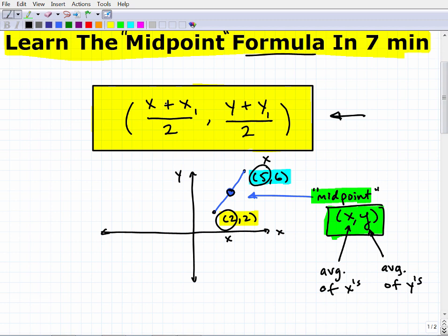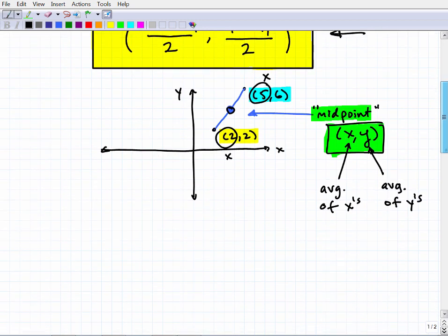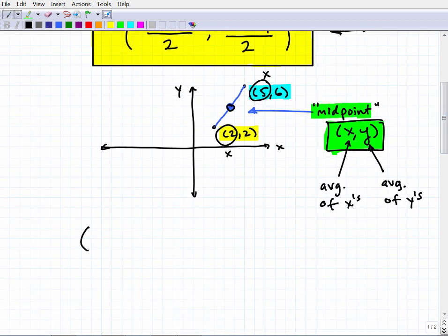How do we find the average? Well, we're going to add up the two points and divide it by two. Very simple. So let's go ahead and actually apply that here. So the midpoint is going to be (2 + 5) / 2, two plus five over two.